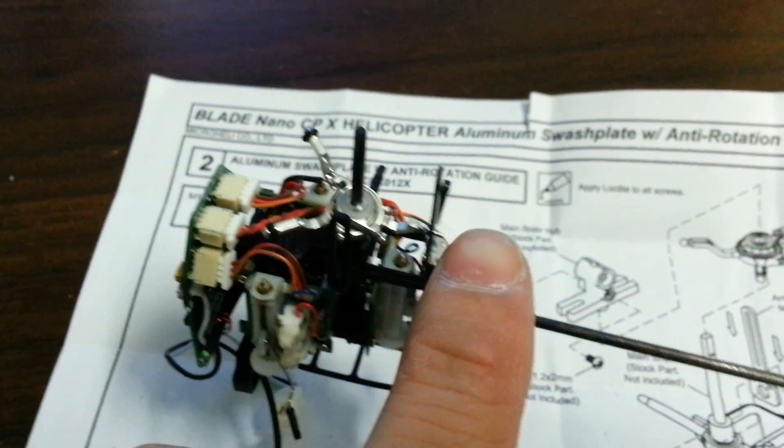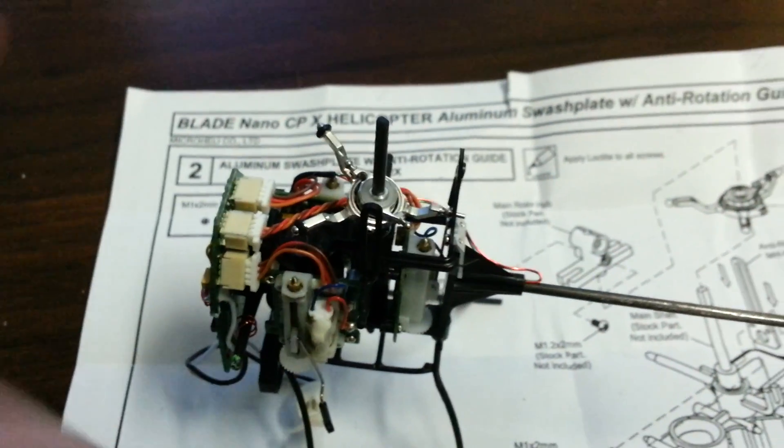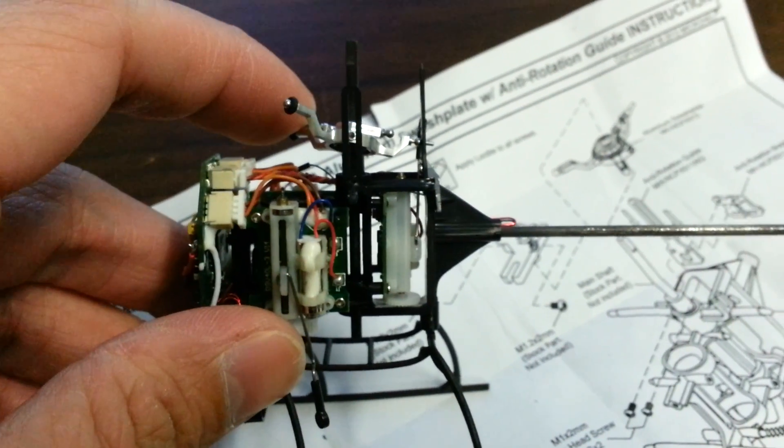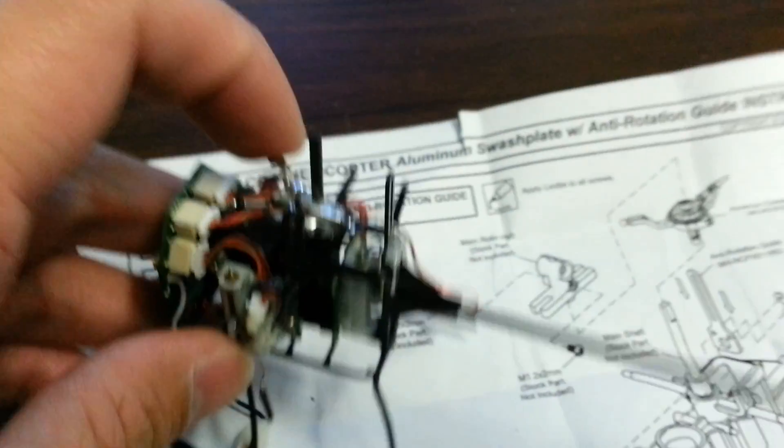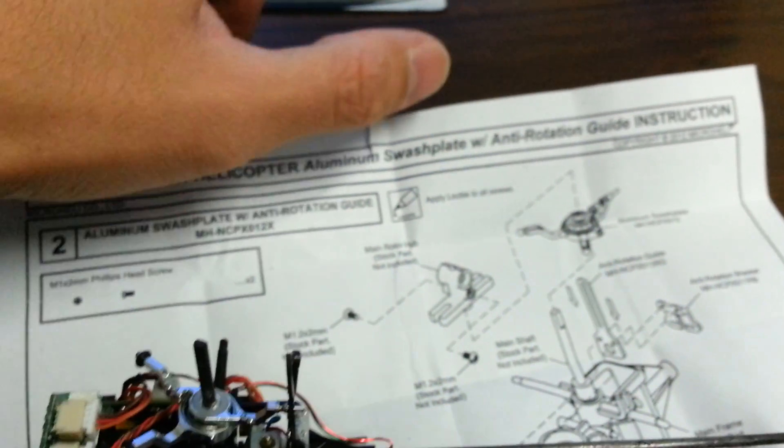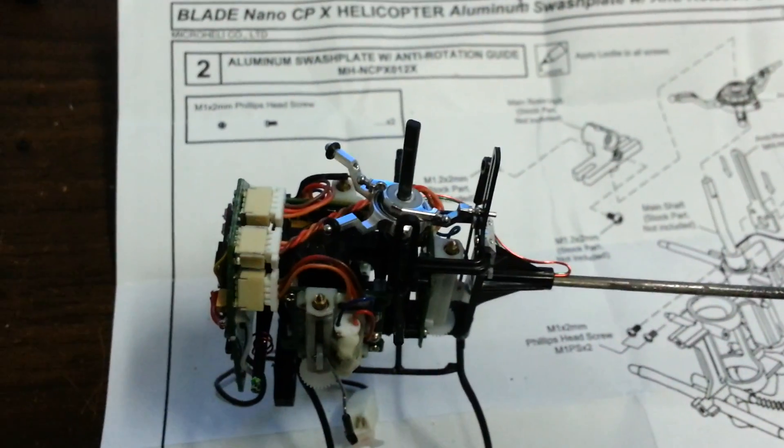So that's going to pop off. That's a slight disappointment - I was really looking forward to flying it. If you get the micro heli swash plate with anti-rotation bracket, micro heli does not include the pin.